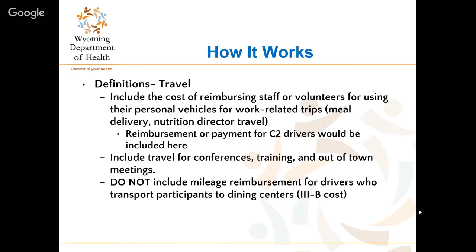Next is Travel. This includes the cost of reimbursing staff or volunteers for using their personal vehicles for work-related trips, such as delivering meals for C2 or a director traveling for work. Also included is travel for conferences, training, or out-of-town meetings. Not included is mileage reimbursement for drivers who transport participants to and from dining centers — that is a Title 3B cost and should not be included under the nutrition program.